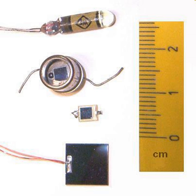Avalanche photodiodes are photodiodes with structure optimized for operating with high reverse bias, approaching the reverse breakdown voltage. This allows each photogenerated carrier to be multiplied by avalanche breakdown, resulting in internal gain within the photodiode, which increases the effective responsivity of the device.